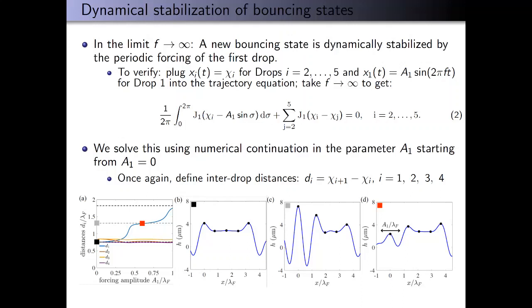As we increase this forcing amplitude on drop one, the inter-drop distances roughly stay the same except for d1, the distance between drops one and two, which increases a lot and then plateaus. The gray square in panel A corresponds to panel C, which is the wave profile and drop positions for an unstable equilibrium state. The gray horizontal dashed line in panel A corresponds to the value of d1 for that unstable equilibrium state shown in panel C. We see that d1 in panel A plateaus right at that value of d1 for the unstable equilibrium state in panel C.